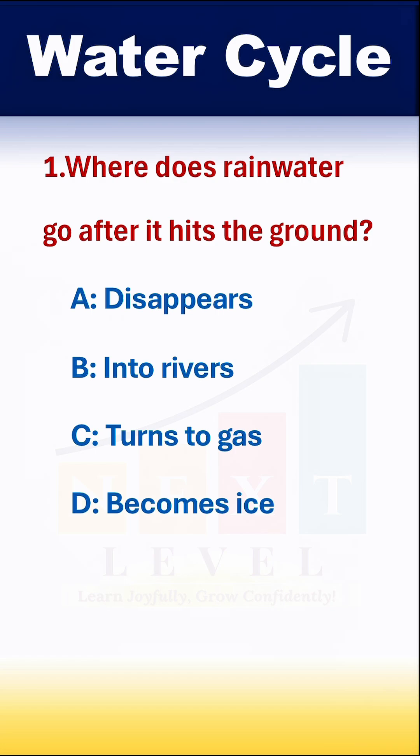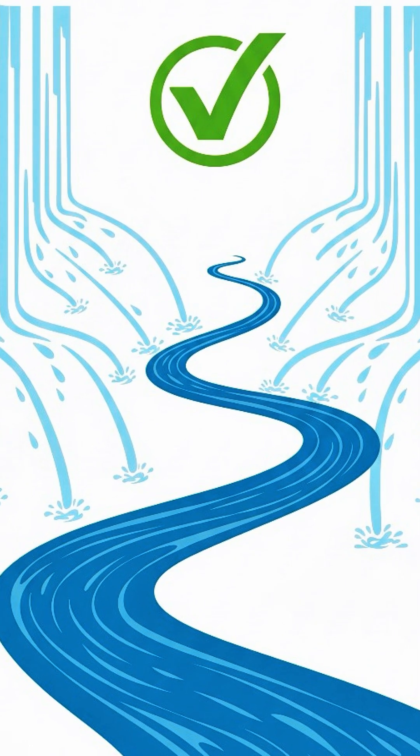What do you think? Where does the rain water go after it hits the ground? It goes into the river. Option B.